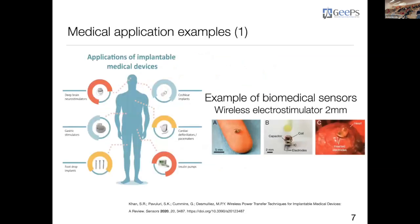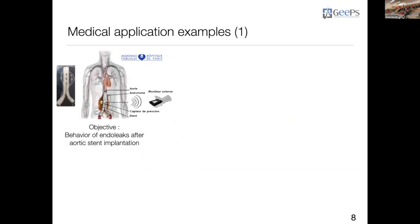Here is a medical application example for connected objects inside the body. We have an example of a biomedical wireless sensor for electro-stimulation. It is necessary to implant this element inside the spinal cord, but it is also necessary to supply this sensor. Another example investigates the behavior of endoleaks after aortic stent implantation, because after implantation we have some problems.